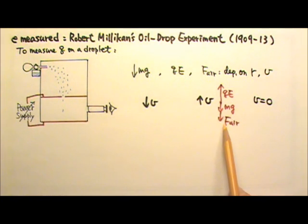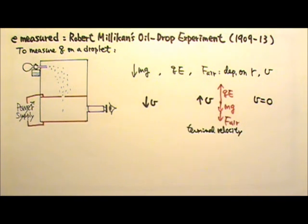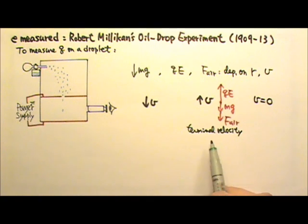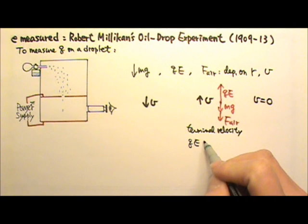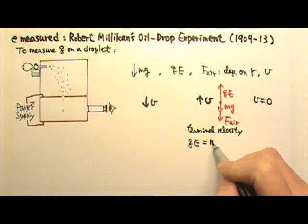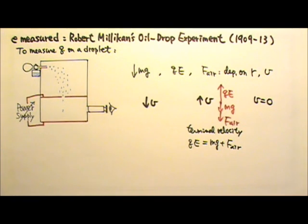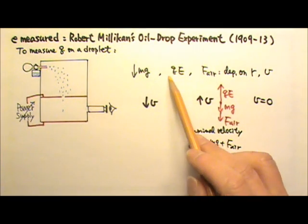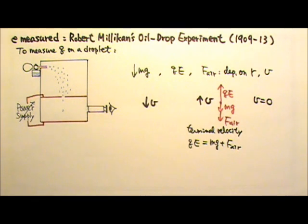Because the droplet is very small, air resistance is important. The droplet would reach terminal velocity very quickly. This means the droplet has a constant velocity and the net force on the droplet is zero. So the upward force Qe would equal the downward force Mg plus the downward air resistance force. Because there are multiple unknowns, such as the charge on the droplet and the radius of the droplet, we need more than one equation to figure out the charge.